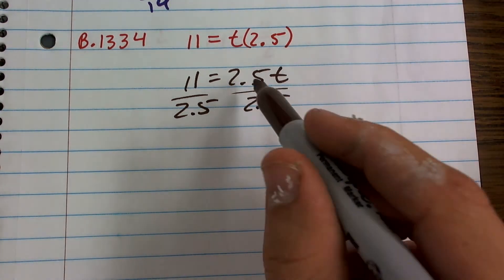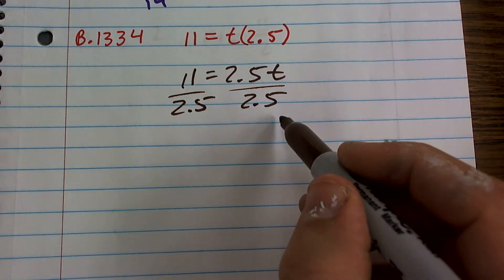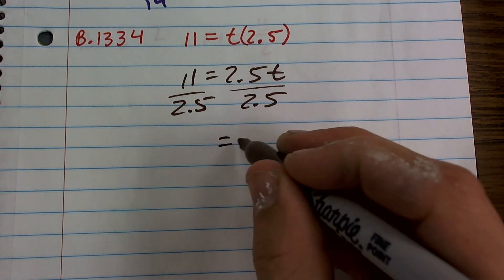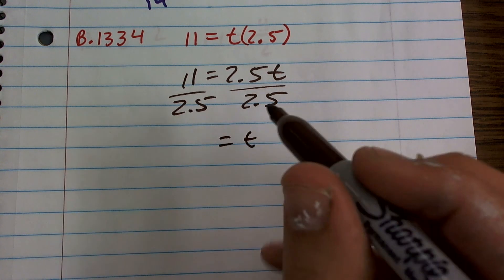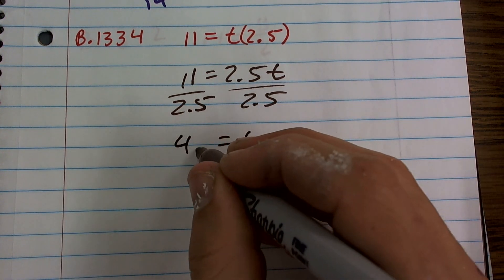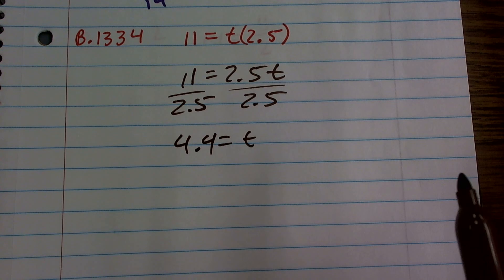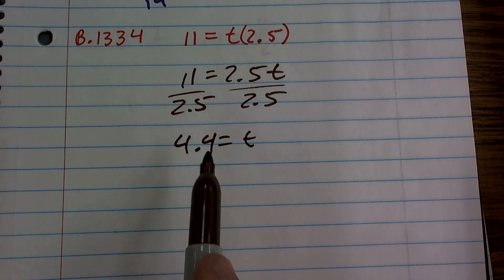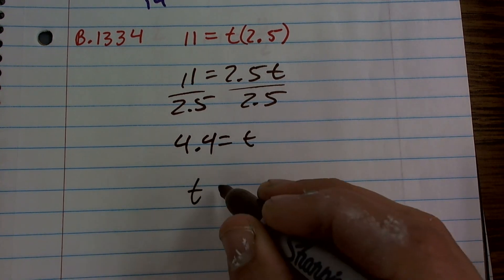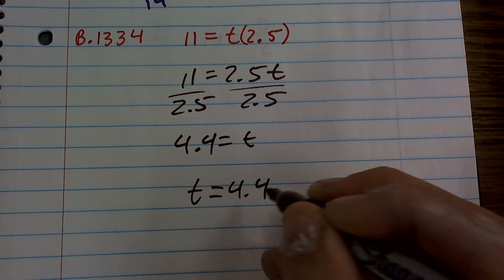Now 2.5 divided by 2.5 equals 1, and 1 times t just equals t. 11 divided by 2.5 equals 4.4, which I used my calculator to compute. Then we rearrange this as t equals 4.4.